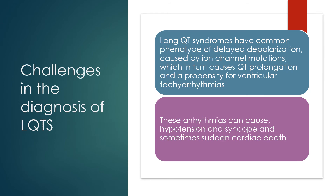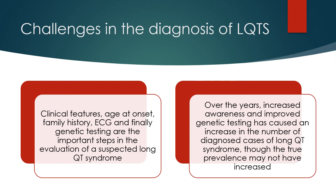Long QT syndromes share a common phenotype of delayed repolarization caused by ion channel mutations, which causes QT prolongation and a propensity for ventricular tachyarrhythmias. These arrhythmias can cause hypotension and syncope, and sometimes sudden cardiac death. Clinical features, age at onset, family history, ECG, and finally genetic testing are the important steps in the evaluation of a suspected long QT syndrome.